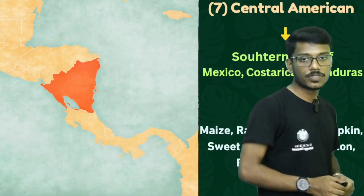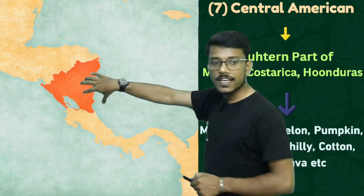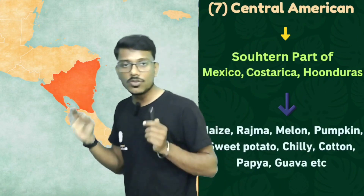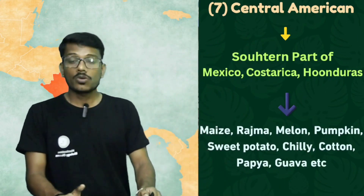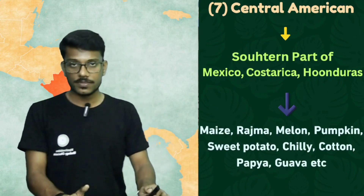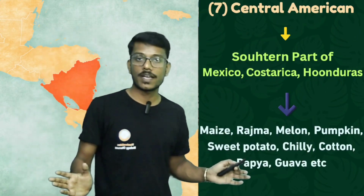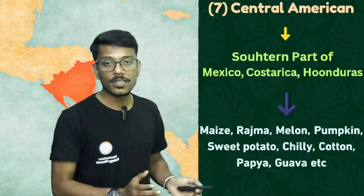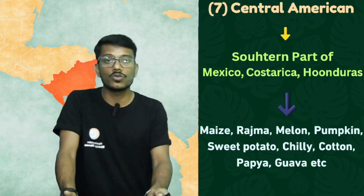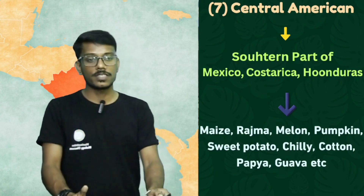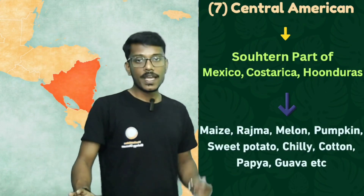The seventh is the Central American center of origin. You can see here this central American center — the southern part of Mexico, Costa Rica, and Honduras. From this region, maize, rice, melon, pumpkin, sweet potato, chili, cotton, papaya, and guava originated.